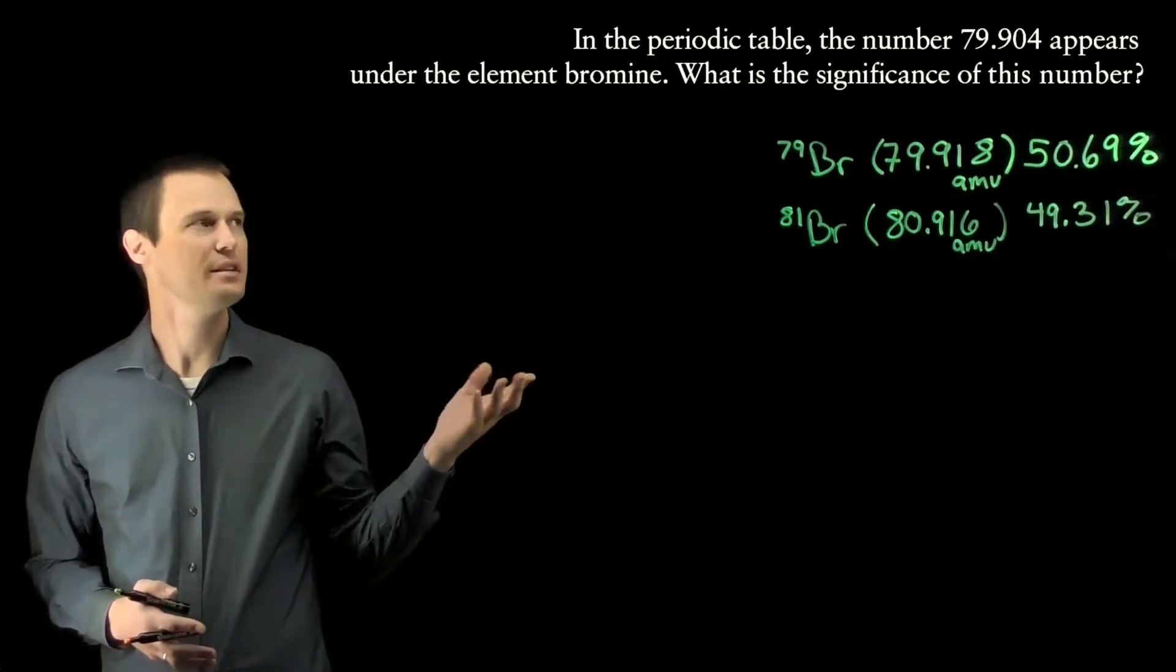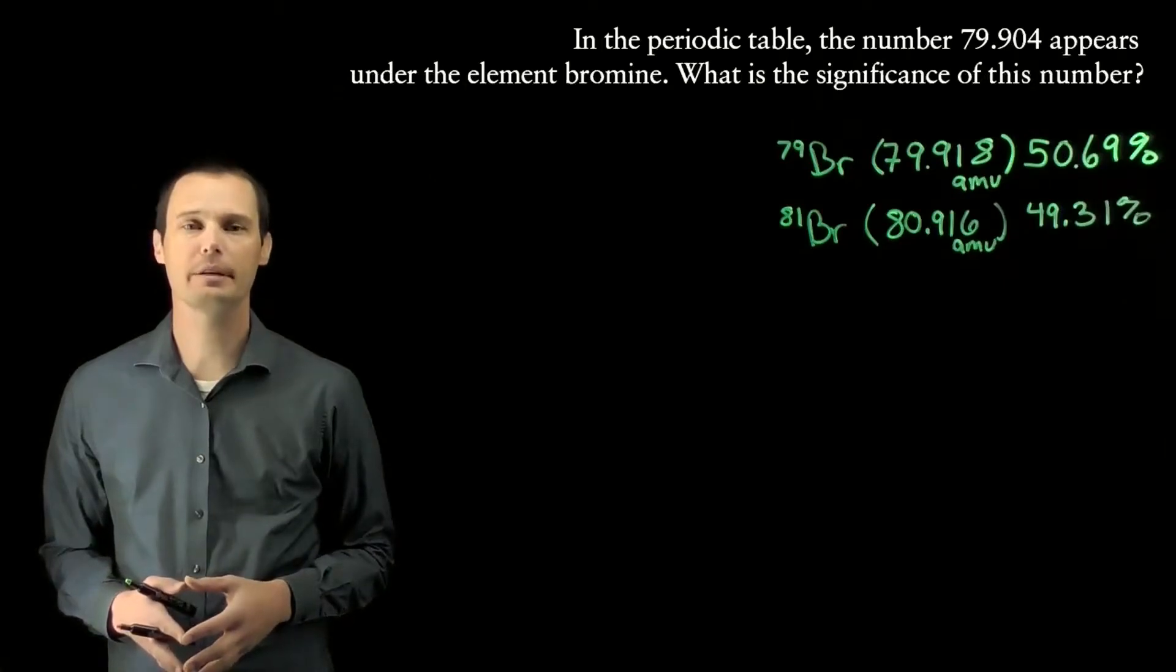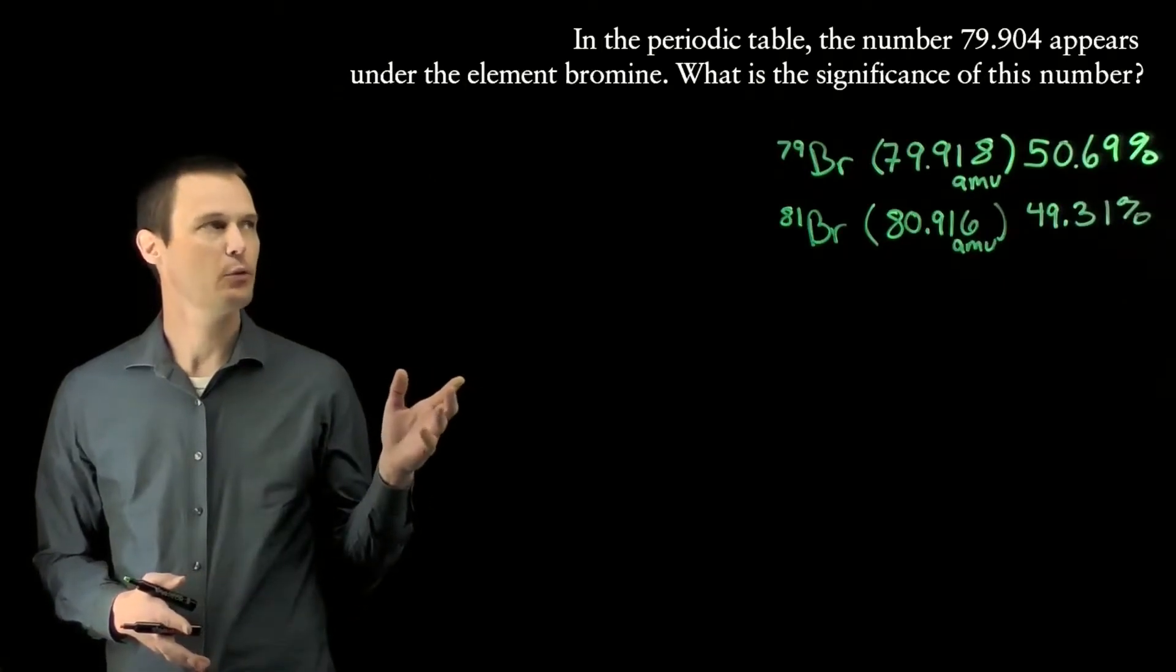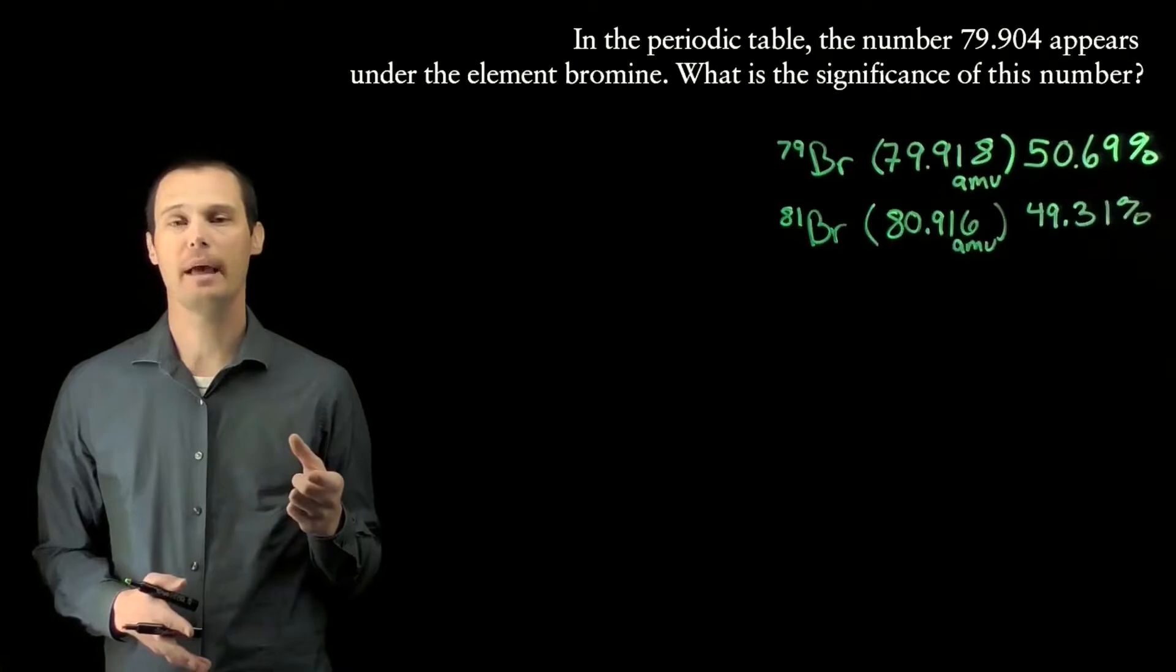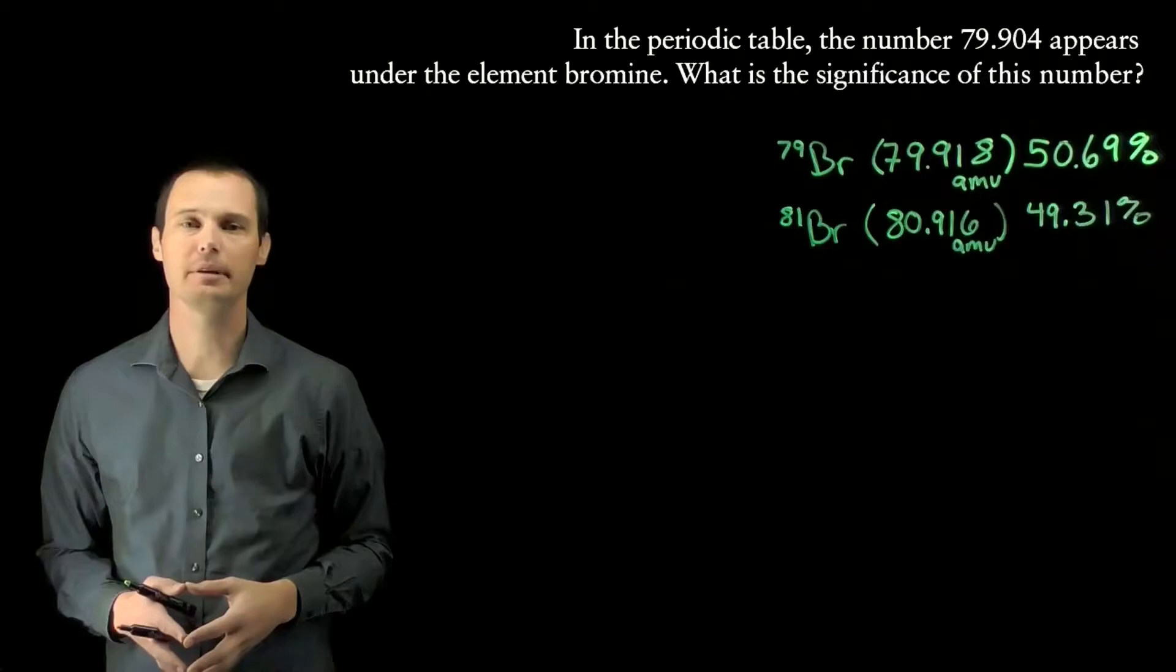This assessment asks us the significance of the number 79.904 written underneath bromine on the periodic table. 79.904 is the weighted average atomic mass of bromine given the major isotopes of bromine and their natural isotopic abundance.